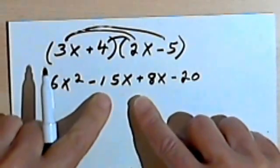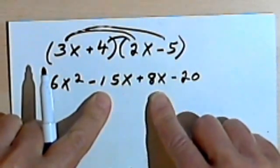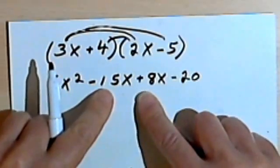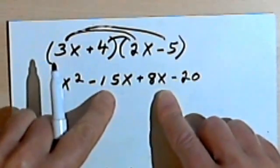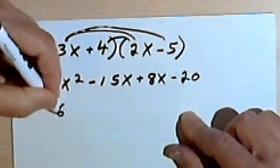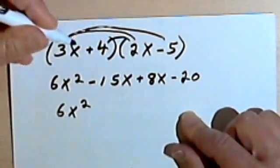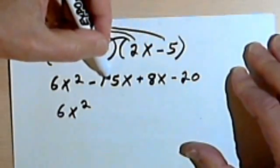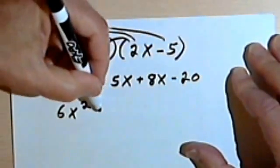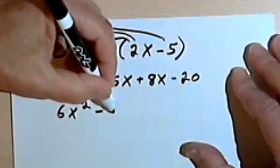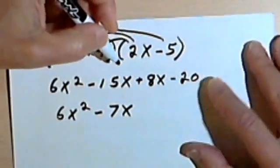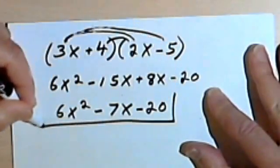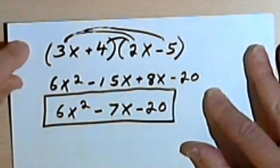Looking at this, I see I have negative 15x and positive 8x. Since those are like terms — both some coefficient times x — I can combine them. So my 6x squared stays the same. Negative 15 plus 8 is negative 7, giving negative 7x. And the minus 20 stays the same. So that's going to be my answer.